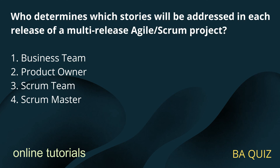Question number 6: Who determines which stories will be addressed in each release of a multi-release agile scrum project? Option 1: Business team. Option 2: Product owner. Option 3: Scrum team. Option 4: Scrum master.